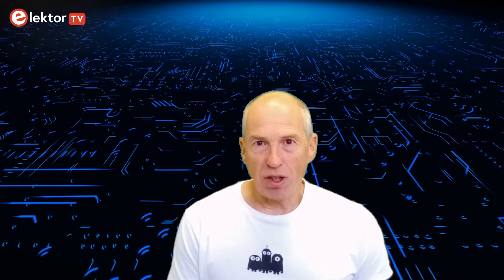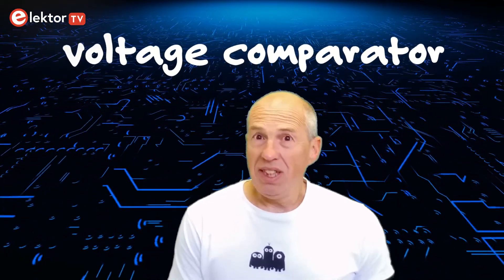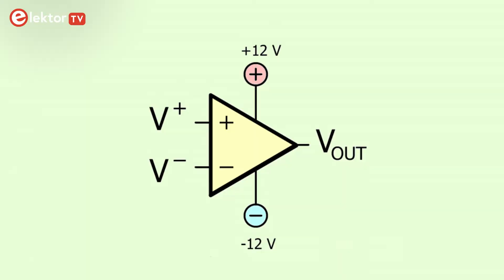The first application that comes to mind is to use the Op-Amp as a voltage comparator, which is indeed a very common application. Due to the Op-Amp's super-large gain, the output voltage will be 12 volts when V plus is higher than V minus, and it will be minus 12 volts when V plus is lower than V minus. In the special case that V plus and V minus are identical, the output will be zero.